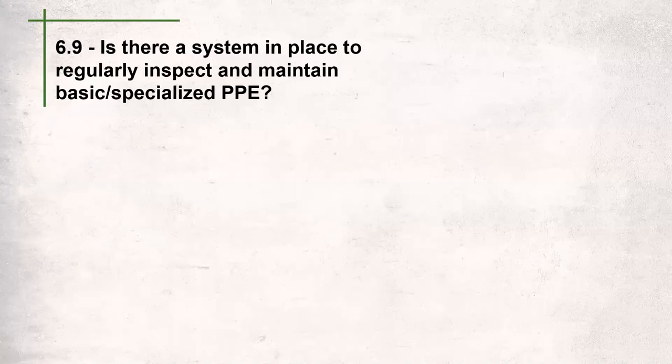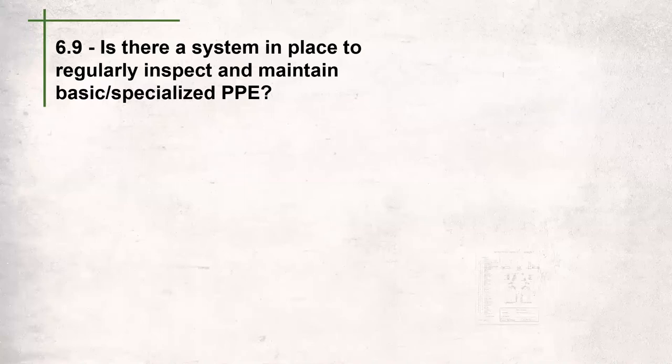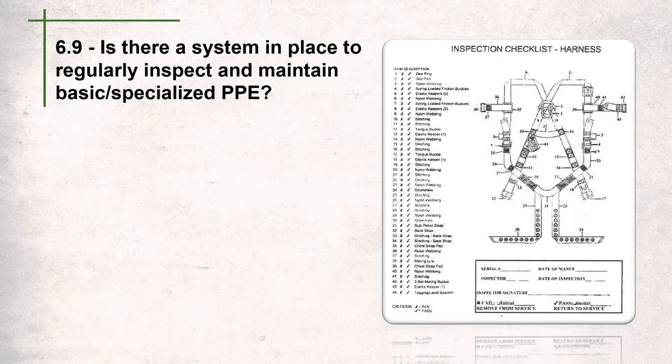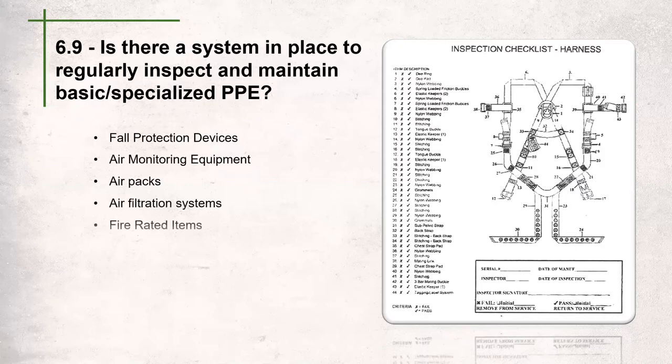Question 6.9 asks: is there a system in place to regularly inspect and maintain basic or specialized PPE? The auditor will look through your inventories and confirm that equipment requiring inspection and maintenance receives it in due time. Once the auditor identifies equipment your company uses — such as fall protection, air monitoring, filtration, or fire-rated equipment — they will compare this to the manufacturer's recommendations. Inspections should be based on these recommendations or better.